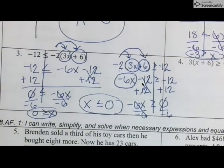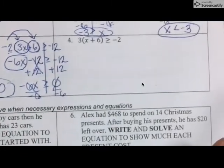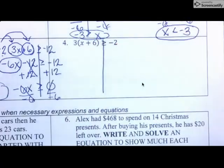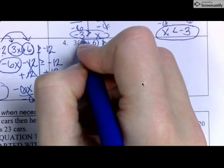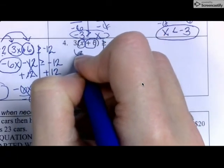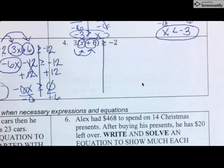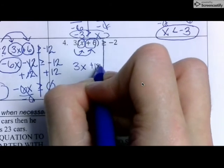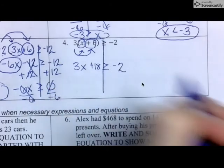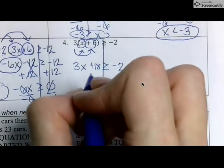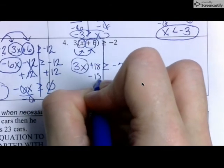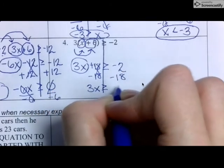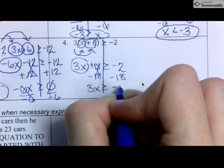Last one dealing with inequalities. I'm going to draw my line. I'm going to next distribute. Three times X is going to be three X. Three times positive six is positive 18. Just bring down my sign as it is. Then I'm going to work to get that three X alone. I'm going to subtract 18 on both sides. Three X, bring down my sign as it is, is negative 20.